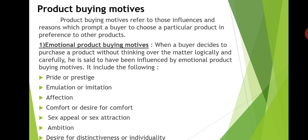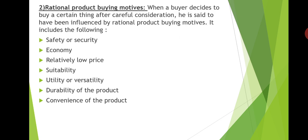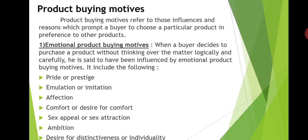Next, imitation. For example, a housewife may like to have a silk sari for the simple reason that all the neighboring housewives have silk saris. They are imitating one another. So emulation or imitation — the desire to imitate others — is one of the important emotional buying motivations.